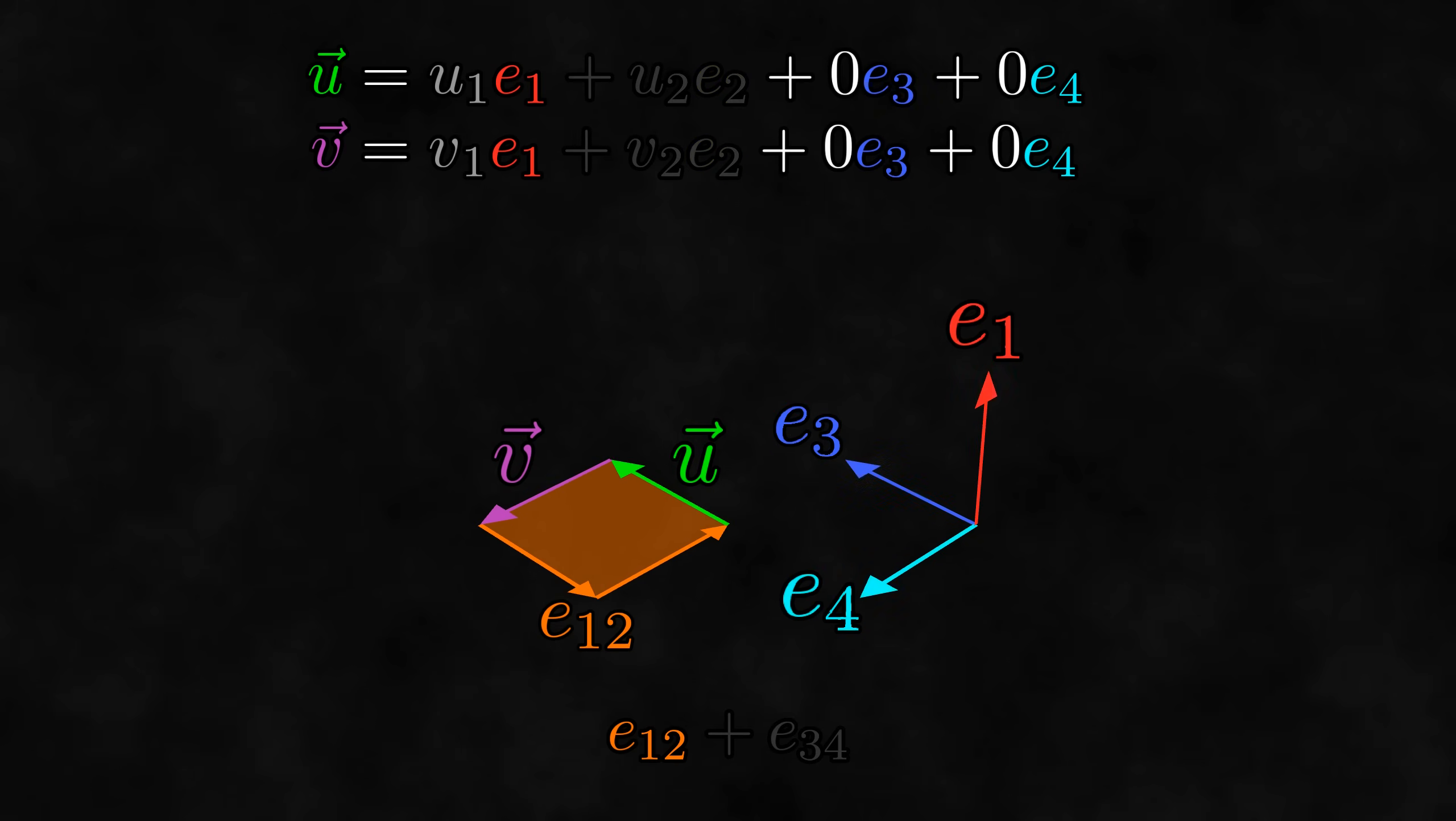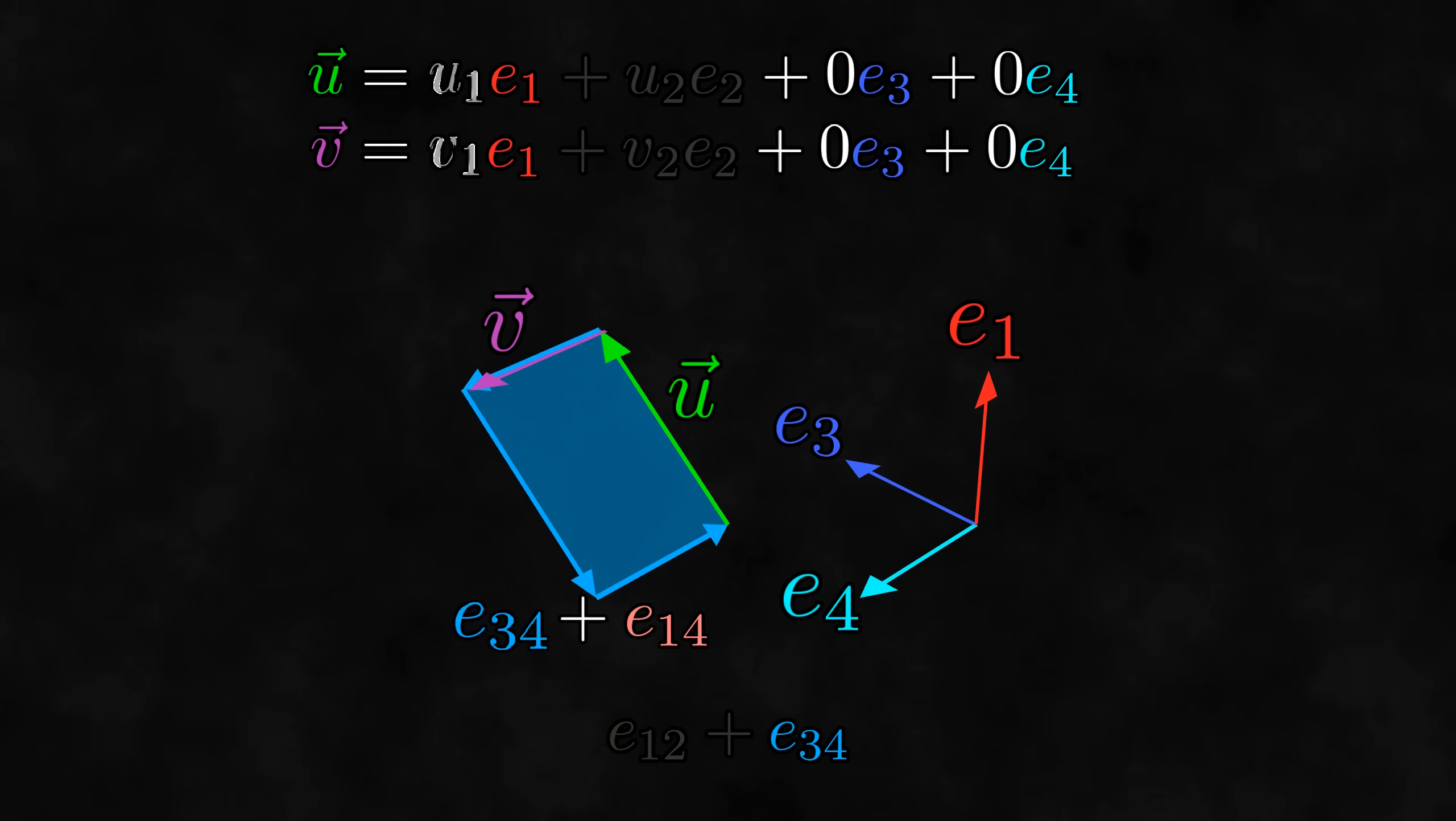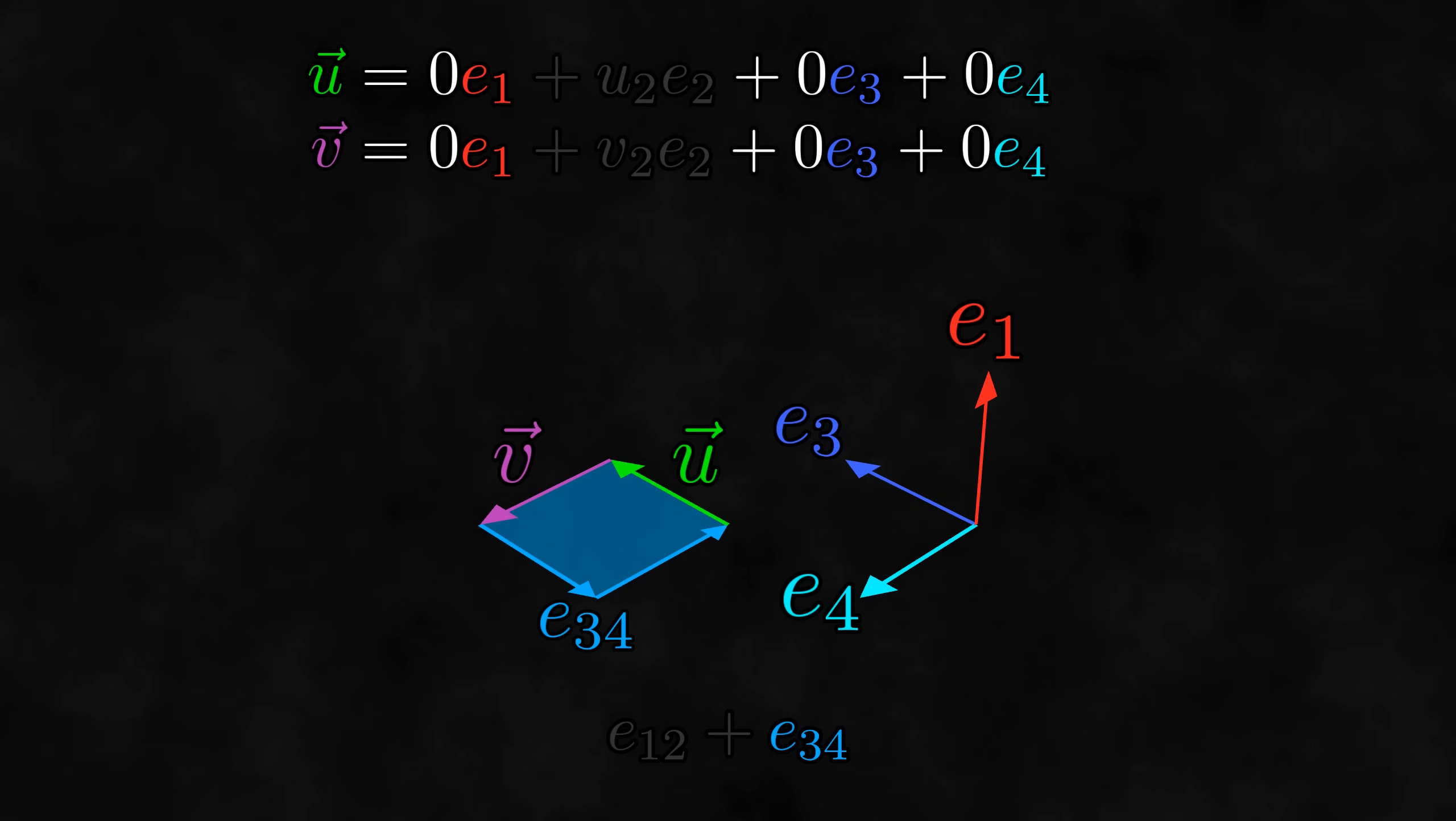We could also look at the three-dimensional subspace containing E1, E3, and E4. Things flip around a bit here, and the visible part of the bivector is now E34 and must not go in the E1 direction at all. By the same arguments as before, this means that the E1 components of the vectors must be zero.